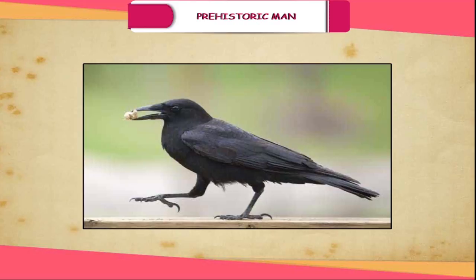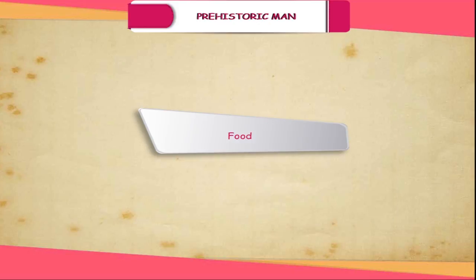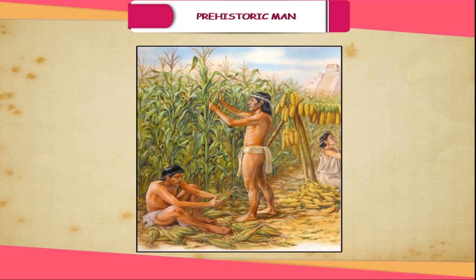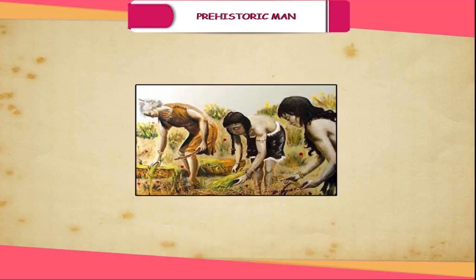Food: Mesolithic man observed the importance of seeds — when placed underground, watered, a new plant came out within a short time. This led to the development of agriculture. During the Mesolithic age, man came to know about the connection between seeds, soil, water and plants. He started taking seeds from grass-like plants of wheat, barley, rice, etc. and added them to his diet. Vegetables and fruits were known to him since long before. Fish became an important part of the menu in this age.